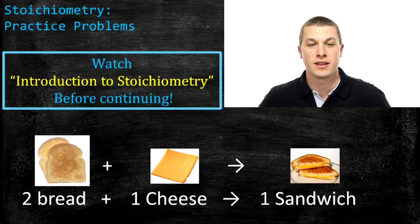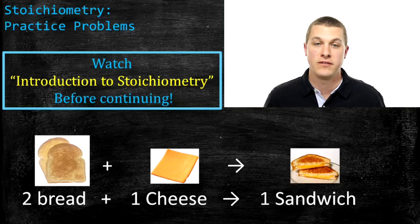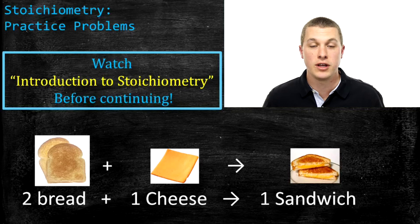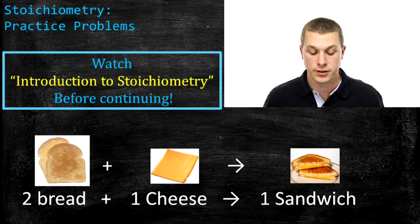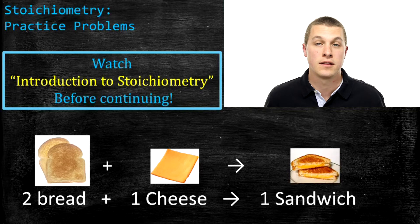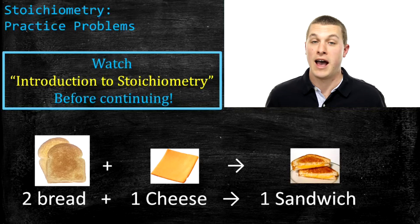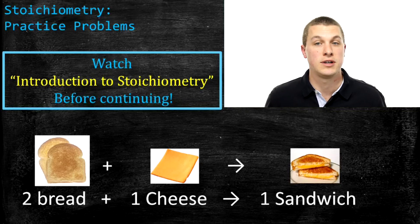In this episode of Real Chemistry, we're going to talk about stoichiometry again and do some practice problems. If you haven't watched my introduction to stoichiometry video, I recommend you start there. Stoichiometry is basically just thinking about our chemical reactions as recipes — just like a recipe for cheese sandwiches, we can think about how much of each ingredient we need.